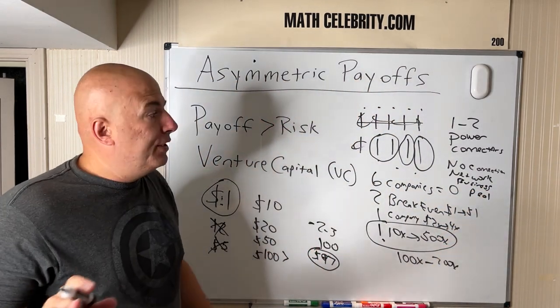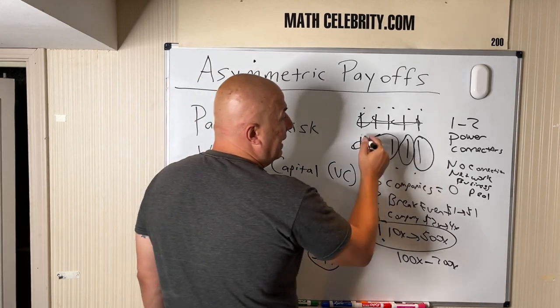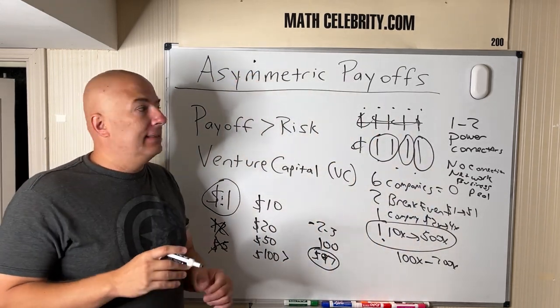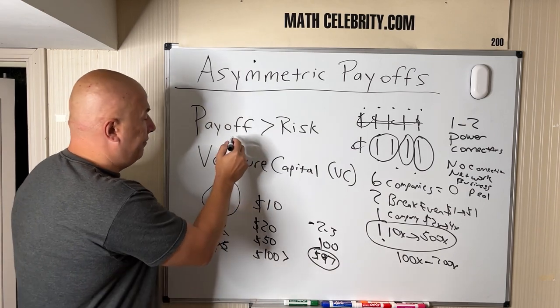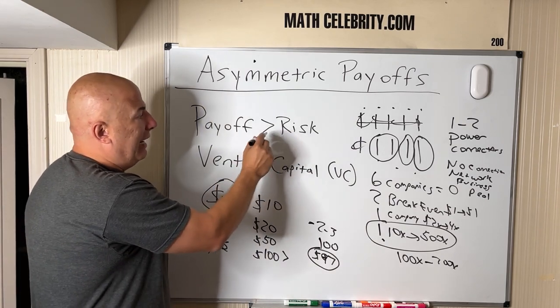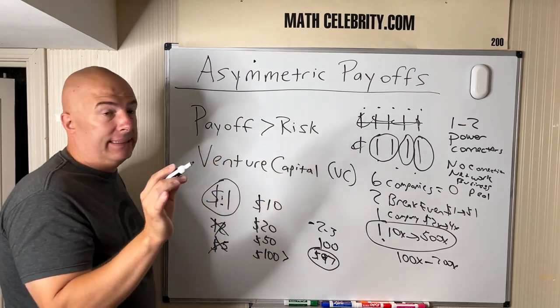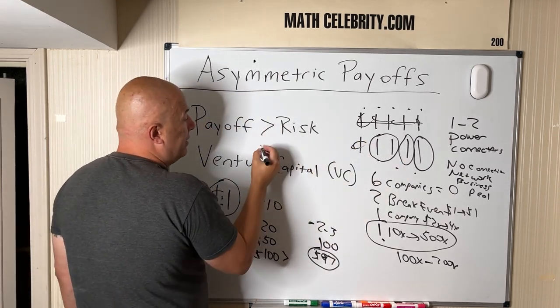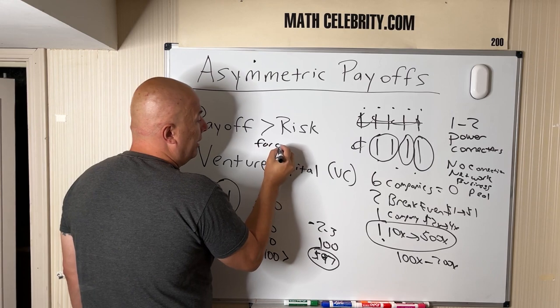and they introduce you to more people in their network who are high value, or you get a business deal, or you get something that you wouldn't have gotten from these nine other people. There's another example of asymmetry: you want your payoff to be, and I say greater than risk, what I should really say is for VC and power networking I should say far greater than risk.